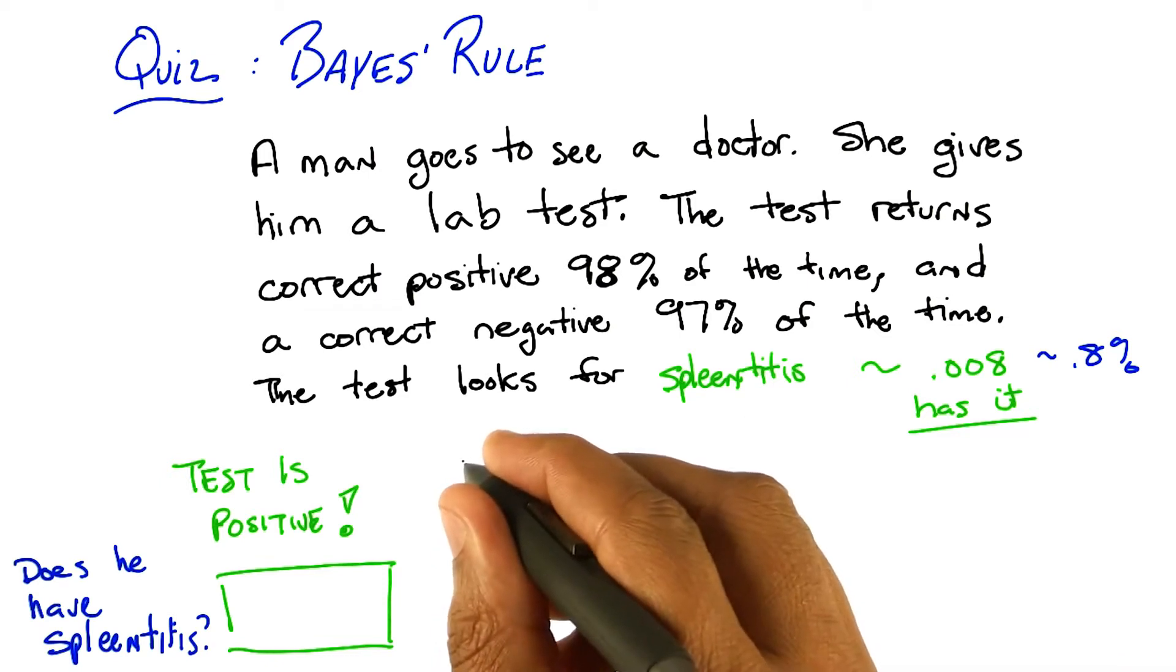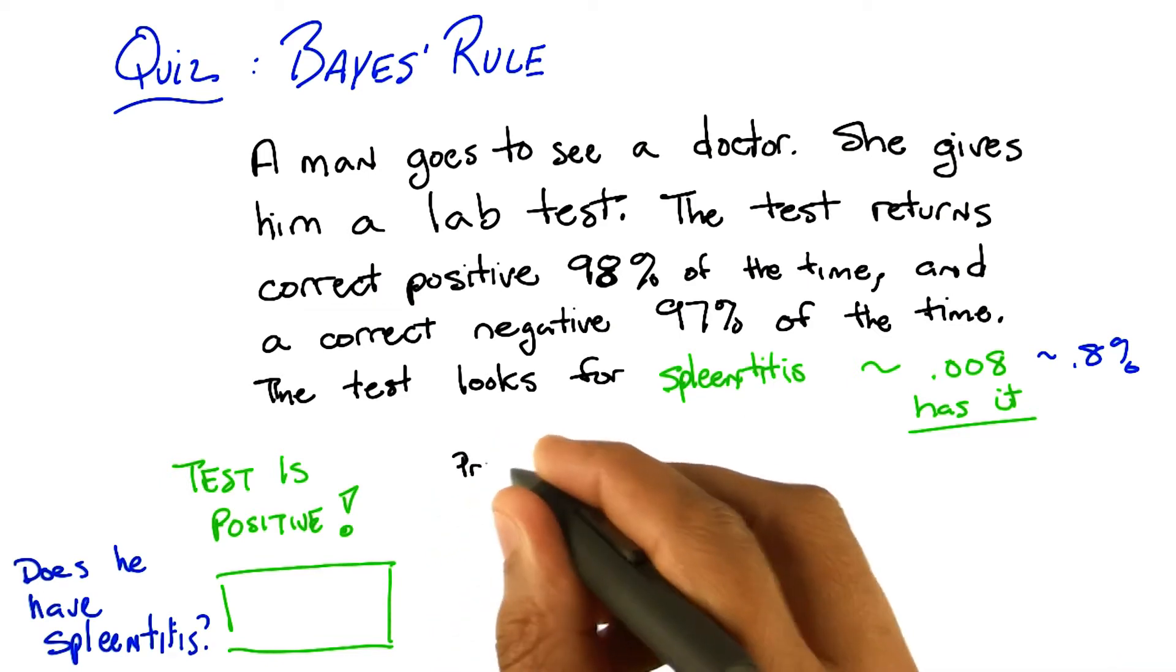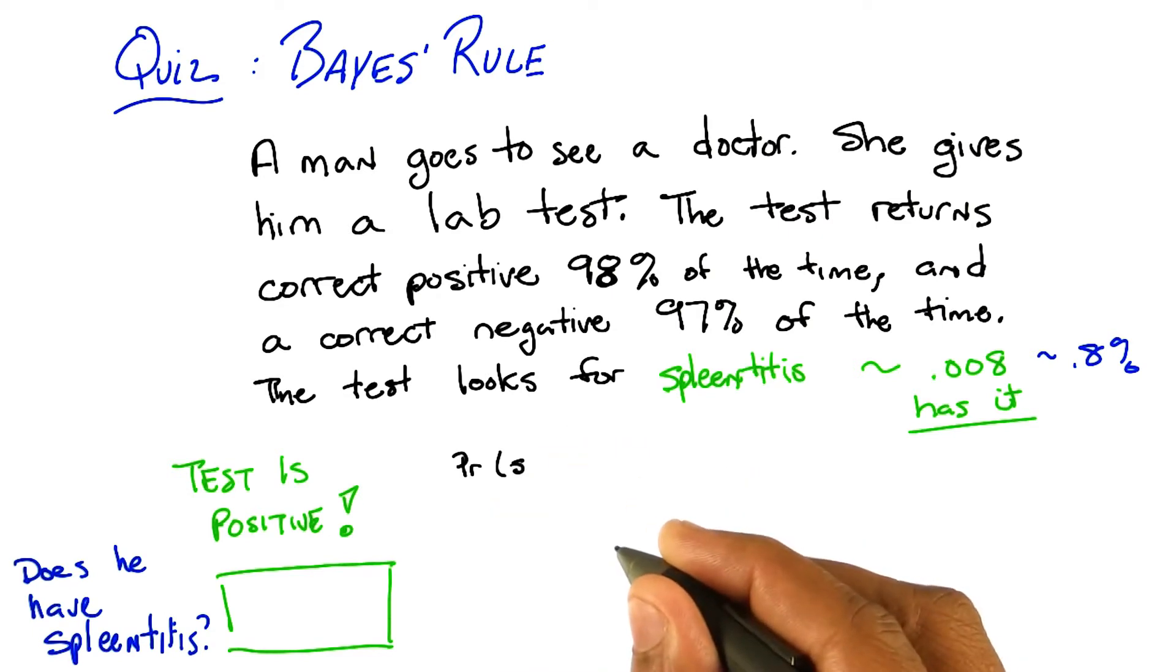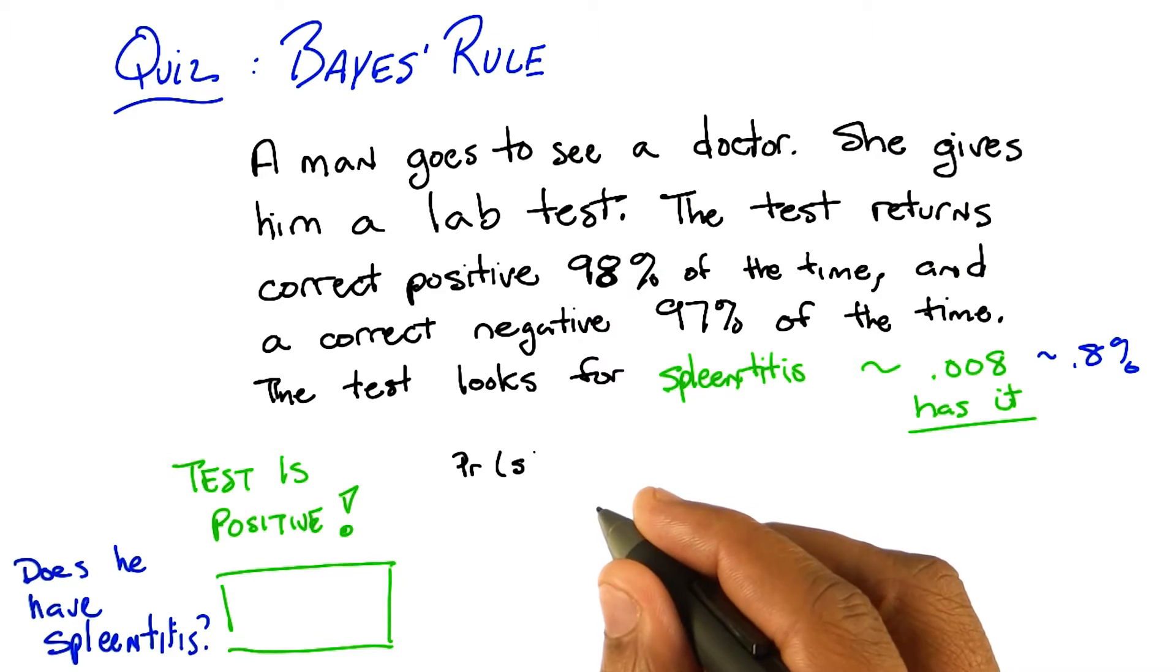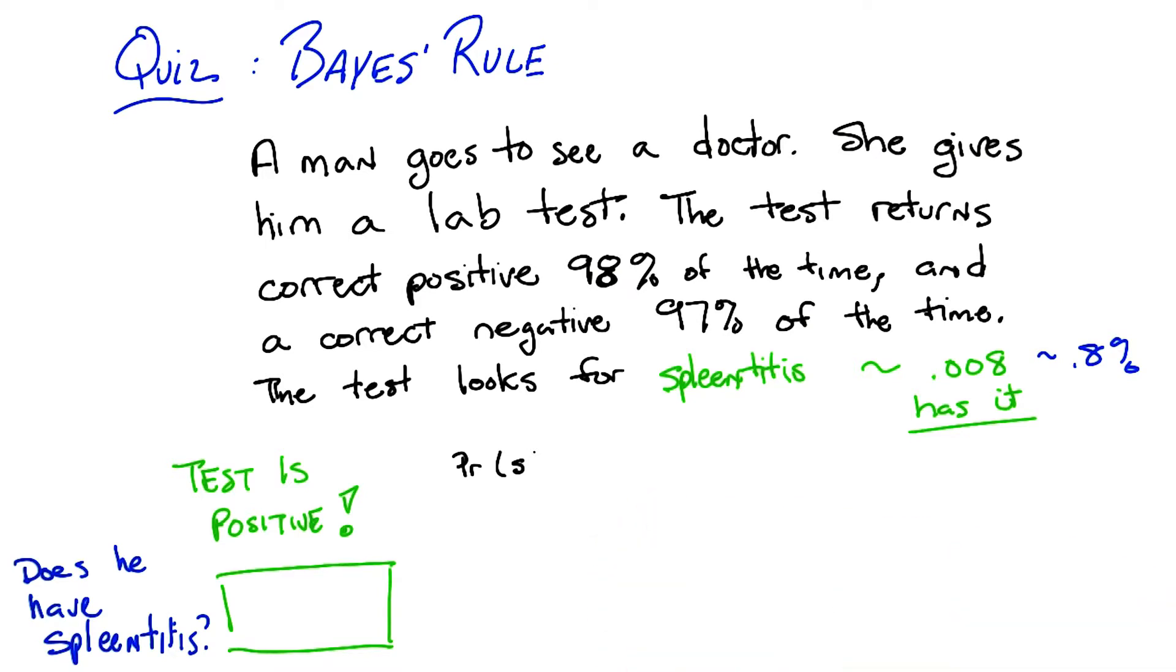Let's write all that out. So, what is the probability of spleen-titus, which I'm just going to write as an S, given... We're making jokes about spleen-titus, but we don't want that to be confused with splenitis, which is a real thing and probably not very pleasant.